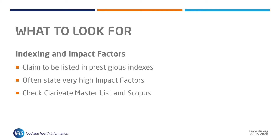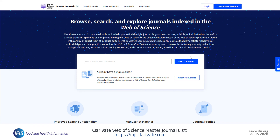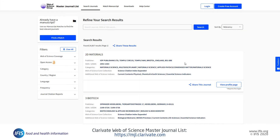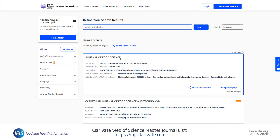Indexing and impact factors: predatory journals often falsely claim to be listed in prestigious journal indexes and often state very high impact factors. If a journal claims to have an impact factor, they will be listed in the Web of Science — check Clarivate's master list to see if the journal is there. If not, then the metric claimed on the journal site is not a true impact factor. This is also true for Scopus SJR and CiteScores too.